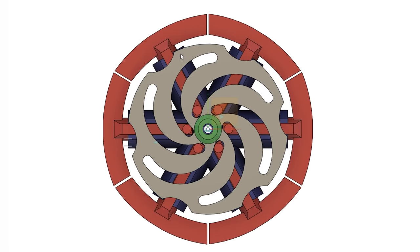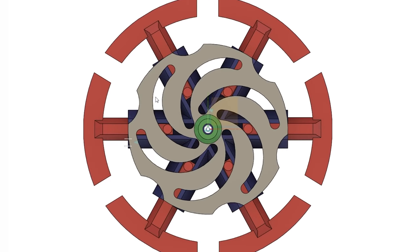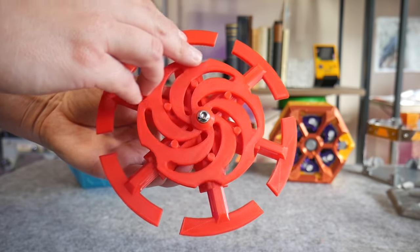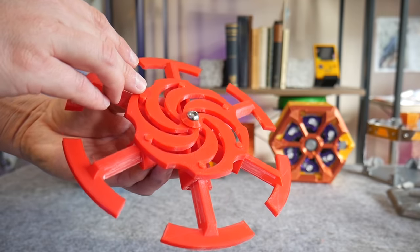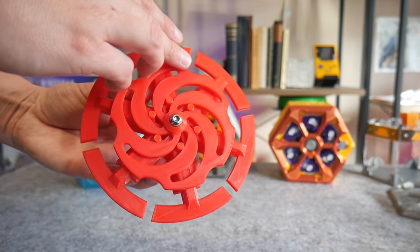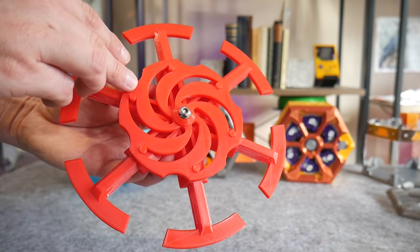So when you pattern this cam and follower movement around the central axis you end up with this. And I've already printed it. The movement is honestly far smoother than I imagined it would be but I can already see some glaring issues. It's supposed to be an expanding pulley right?